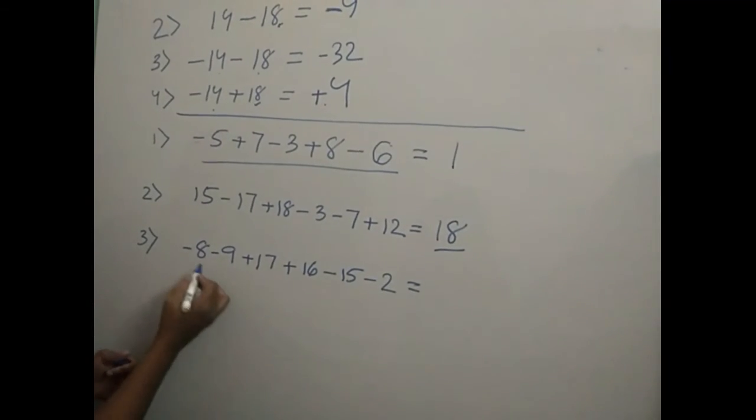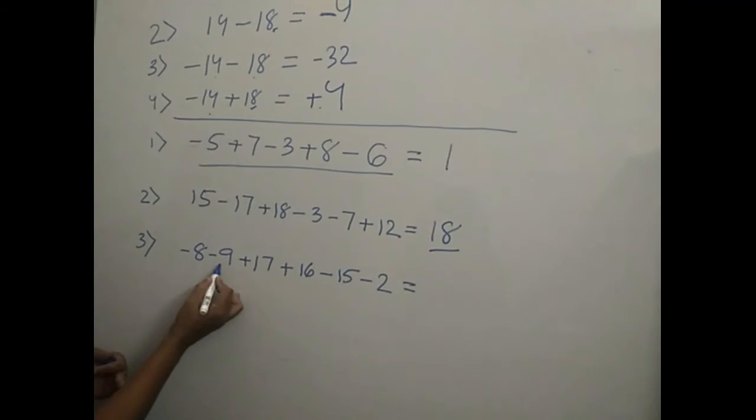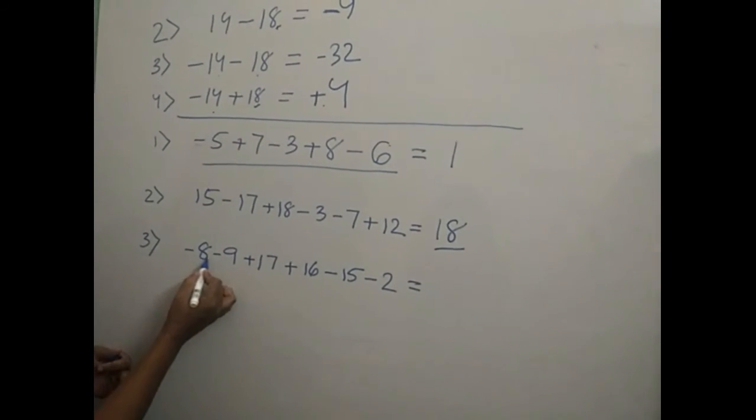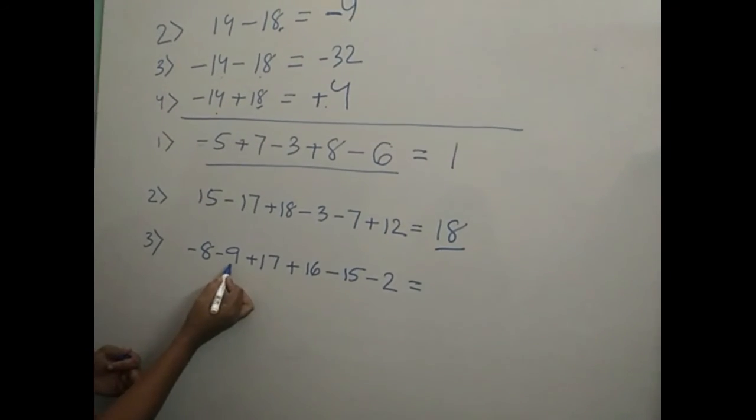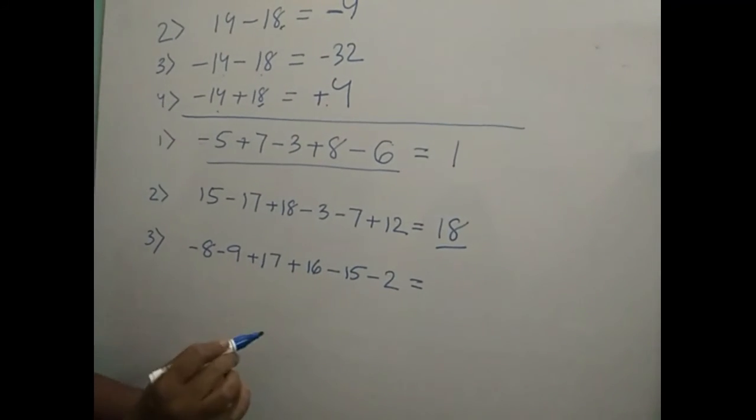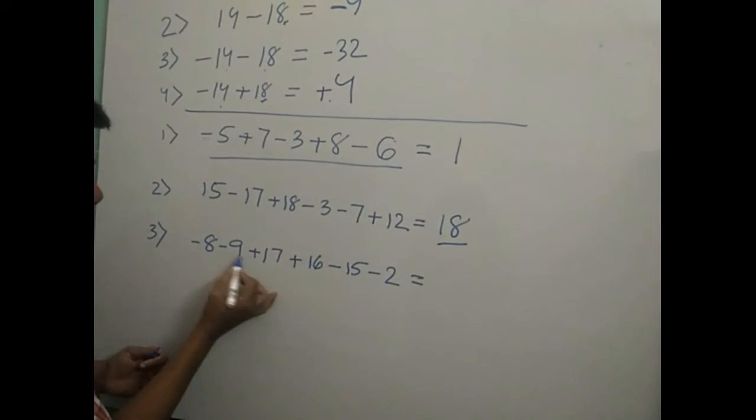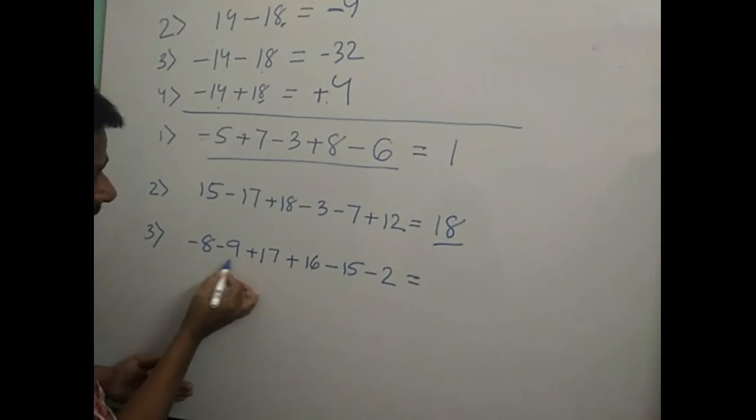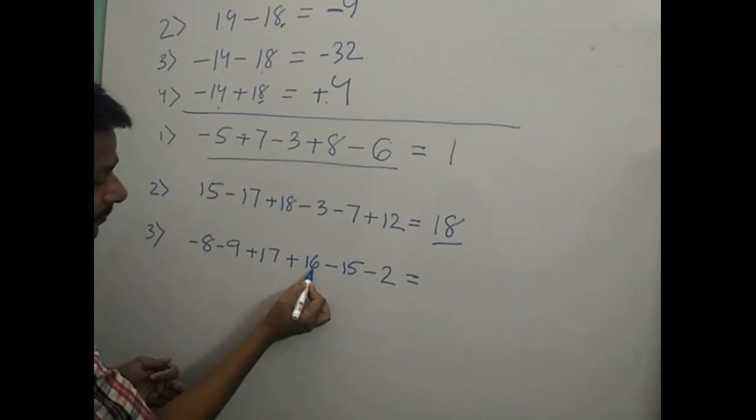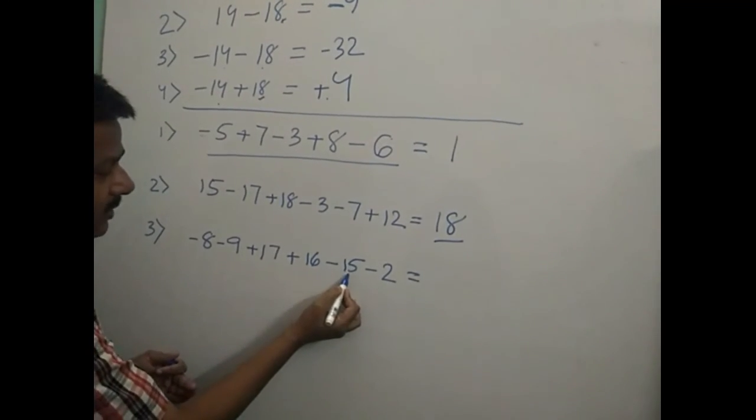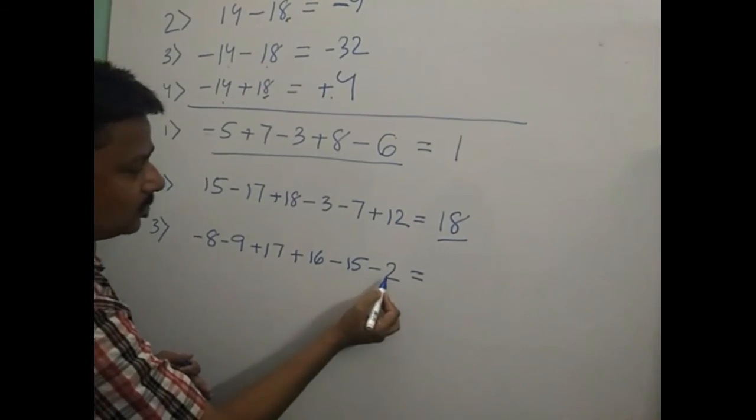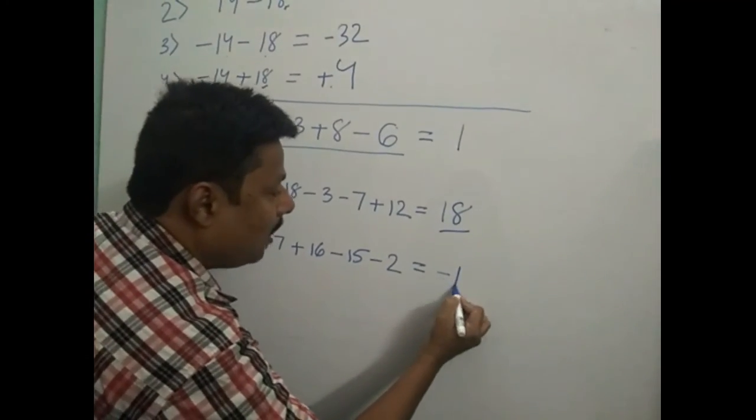Let us see the next example. Minus 8 minus 9, both are negative numbers, you add them, this is minus 17. Minus 17 plus 17 is equal to 0. Nothing is there on the left side, now start from here. 16 minus 15 is equal to 1. 1 minus 2 is equal to minus 1.